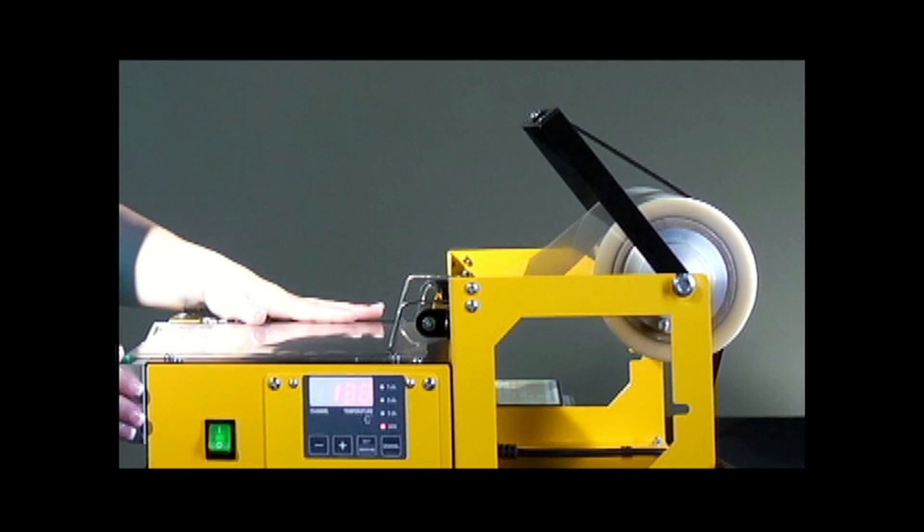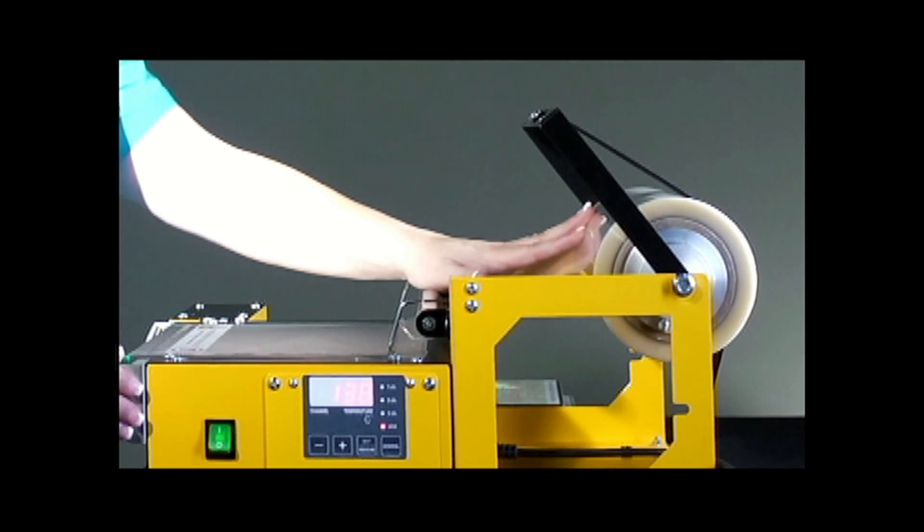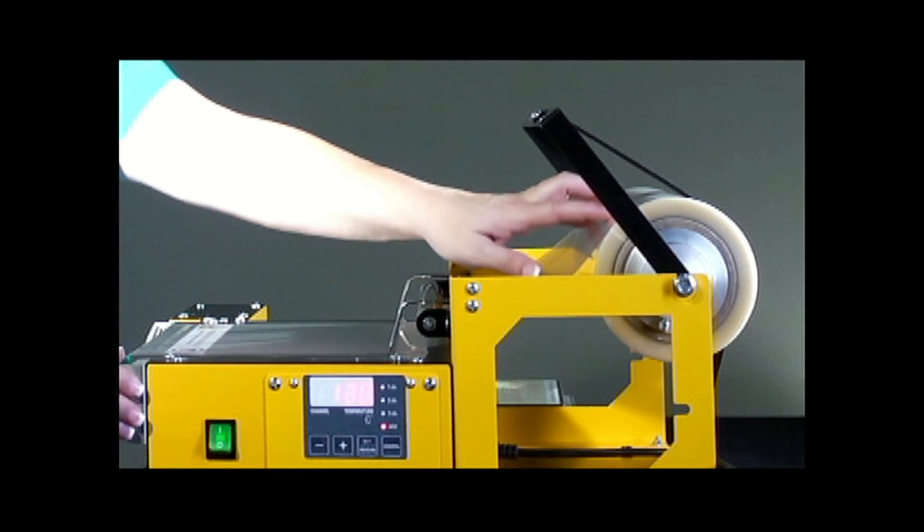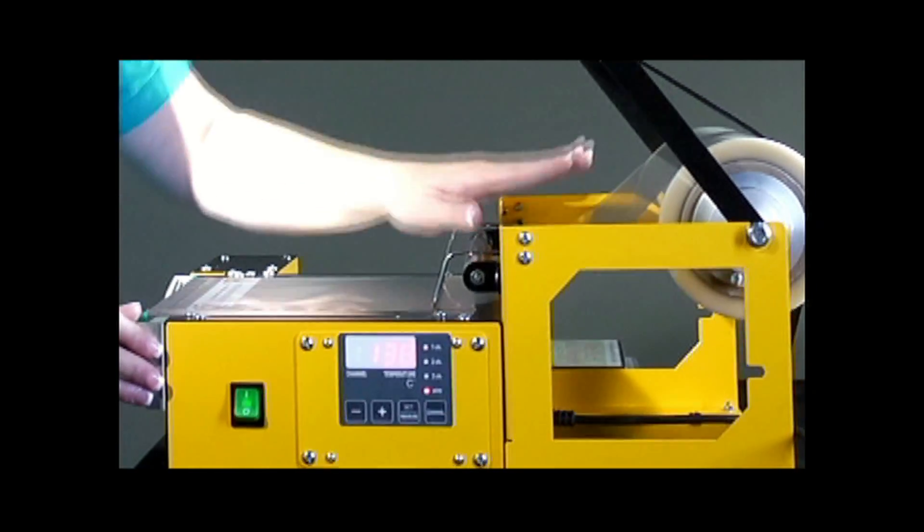Right now, our machine's set up for a DVD. The size of the roll here dictates that. We could easily change this roll size out and be ready to do CDs.